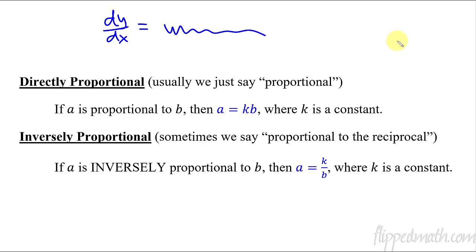Now also, we need to review proportionality. I'm hoping at some point in pre-calculus or even before that, some kids cover this as early as middle school math, you've covered what a direct proportional relationship is and an inverse proportion. Directly proportional, sometimes we just say proportional. If you see proportional, it means directly proportional. If a is proportional to b, then a equals some constant k times b. So it's like it has a coefficient. That's directly proportional.